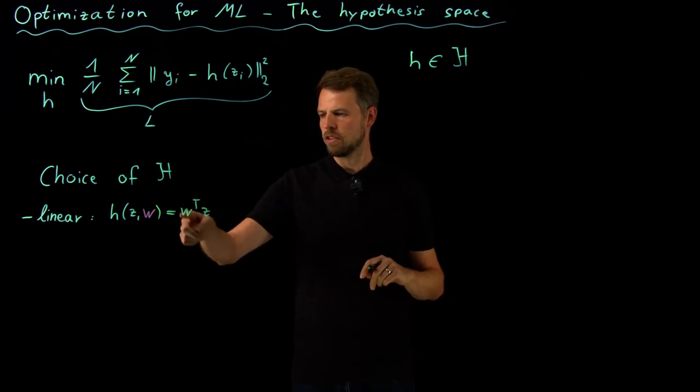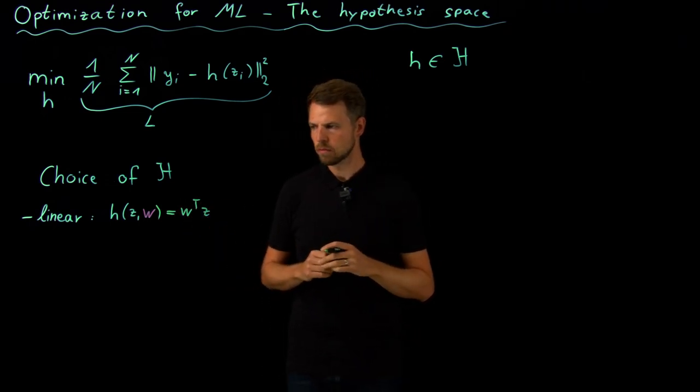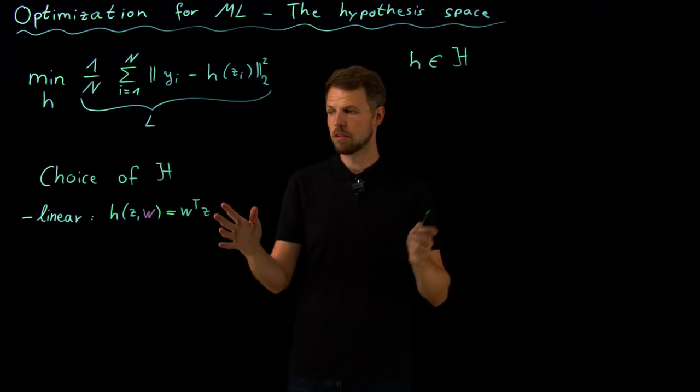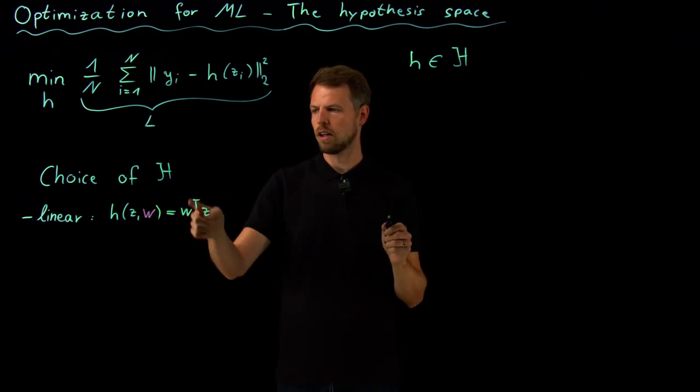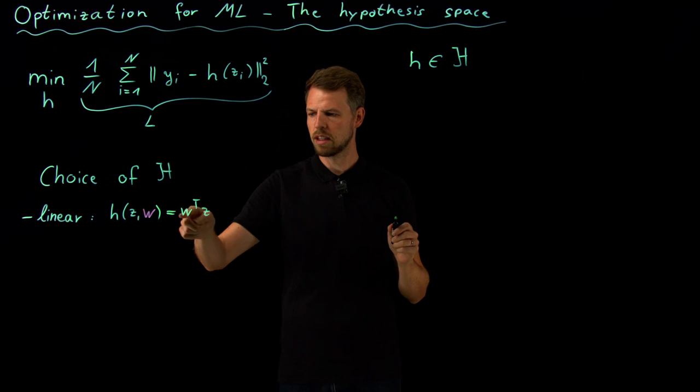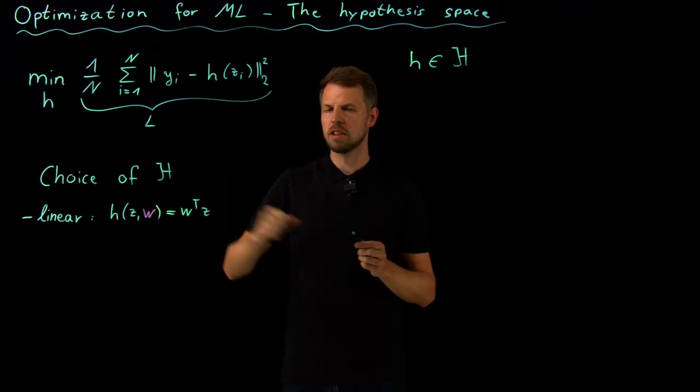So if I have an input vector of dimension d, I have d weights, and this is the inner product between the weights and the inputs. Now my hypothesis space would be like this, and the weights really determine which models are contained in this big H. So any w I pick gives me a little h, which is an element of this hypothesis space of linear models.